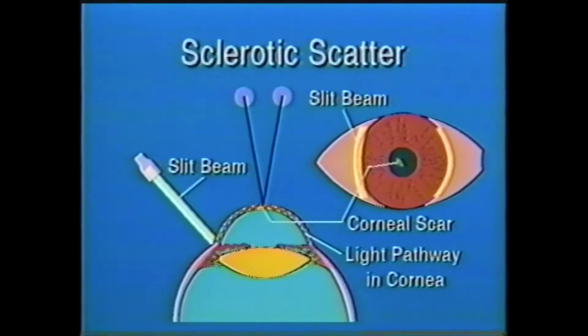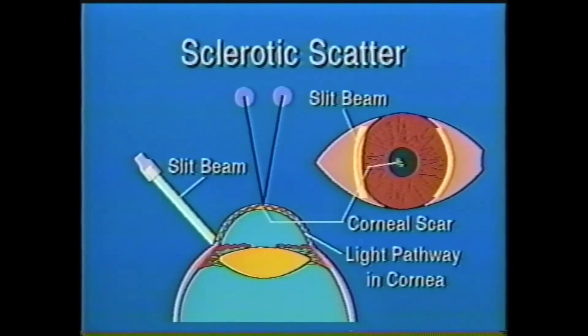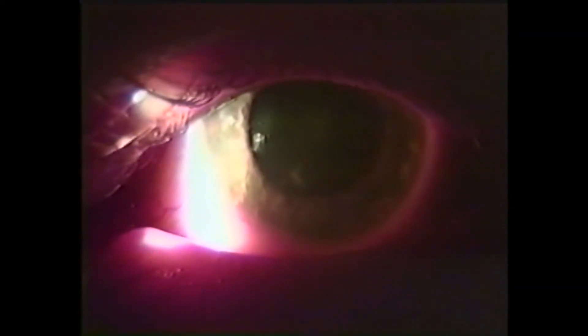Sixth and last, sclerotic scatter. This uses a light source that is decentered and defocused, that is no longer parfocal with the microscope. The slit beam is aimed at the limbus or the edge of the cornea, while the microscope is focused on the cornea. This maneuver is very useful in picking up fine abnormalities of the cornea, such as these corneal infiltrates.